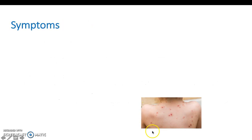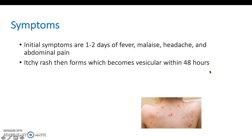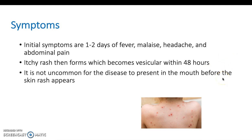This is typically what chicken pox looks like. Initial symptoms include fever, malaise, headache, and abdominal pain. The itchy rash forms within 48 hours and can be present in the mouth before the skin rash appears — always check the mouth if a child may have chicken pox but doesn't yet have a visible rash.